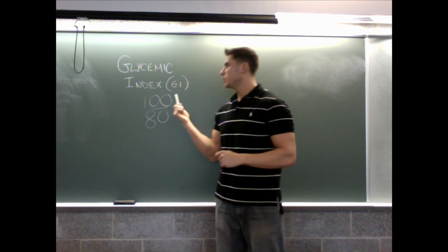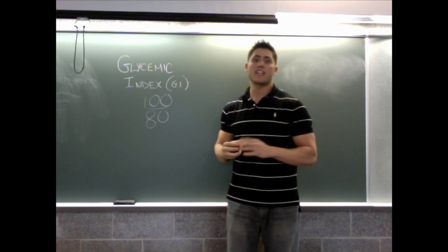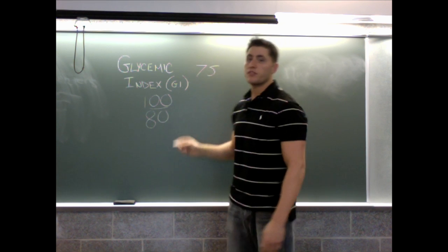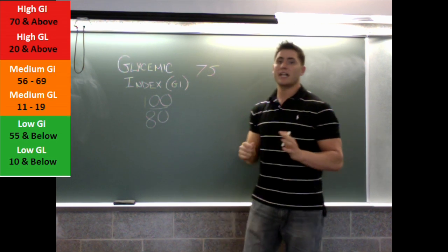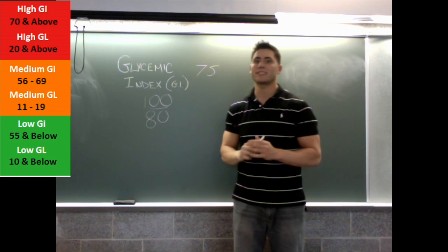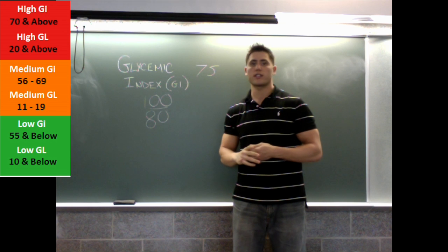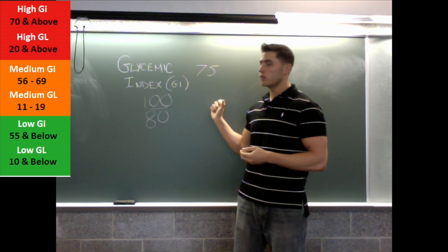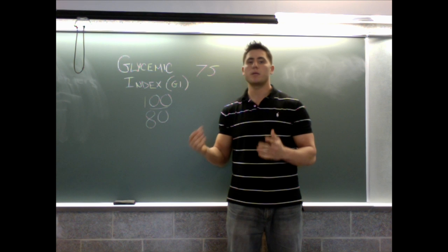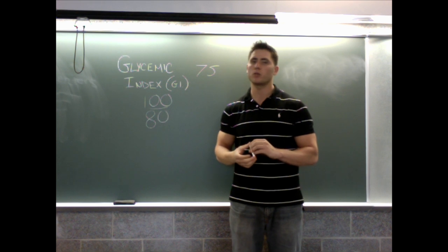And this leads into the glycemic load, which has to do with the serving size of the carbohydrates. Take for instance watermelon. Watermelon on the glycemic index is going to be about 75, which out of 100 is considered pretty high. But now let's take a serving size, say four ounces of watermelon at this GI only has about six grams of carbohydrates. So the glycemic load is only about eight, which is considered very low. So the glycemic load plays a role with the glycemic index as well. It's affecting us every day.